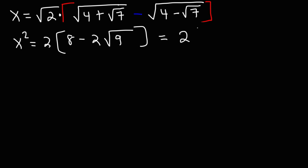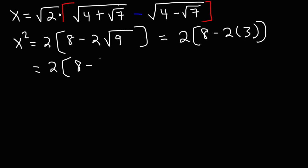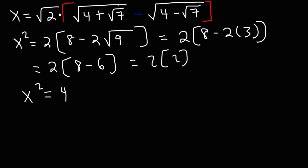The square root of 9 equals 3, and 2 times 3 is 6. Then 8 minus 6 is 2, and 2 times 2 is 4. So we have x squared is equal to 4.